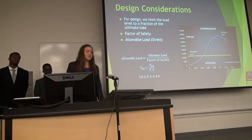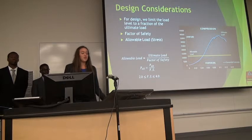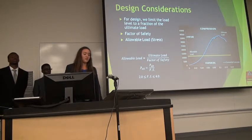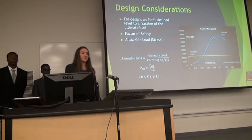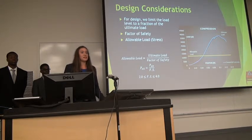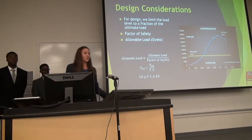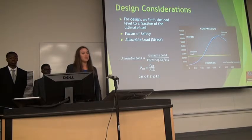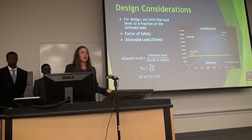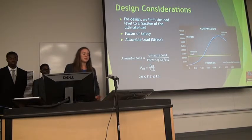Another aspect we talked about was design considerations. For design, we limit the load level to a fraction of the ultimate load — this is where the factor of safety comes in. A great example is an elevator: it's posted that the maximum load is around 4,000 pounds, but in reality it can hold up to three times that amount, around 12,000 pounds. Even if a little more load is applied, it is still safe, which is why the factor of safety is important.